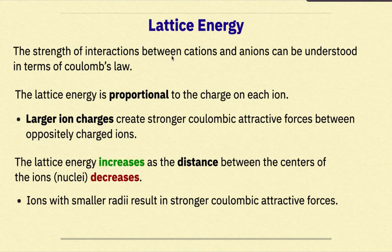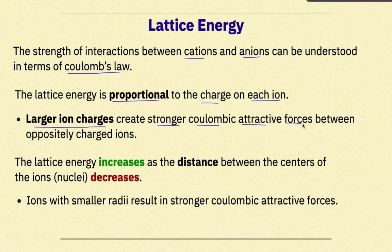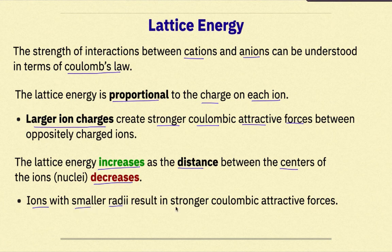The strength of interactions between cations and anions can be understood in terms of Coulomb's Law. The lattice energy is proportional to the charge on each ion — larger ion charges create stronger Coulombic attractive forces between oppositely charged ions. The lattice energy also increases as the distance between the centers of the ions decreases; ions with smaller radii result in stronger Coulombic attractive forces.